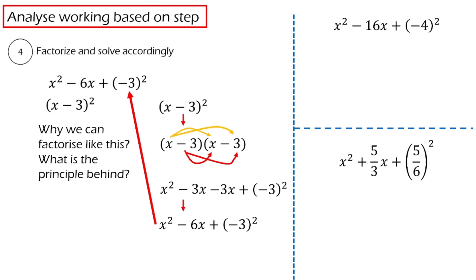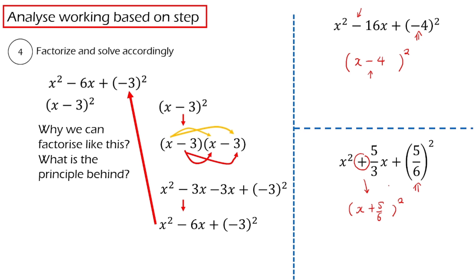I have created some examples to explain this. What we need to do is put a bracket, copy the first x, and copy the last term which is (negative 4) squared. To confirm whether the sign inside the bracket is negative or positive, look at the sign of B. If B is negative, the sign inside the bracket must be negative. For the next example, we write x and copy (5/6) squared. Since B here is positive, the sign inside the bracket will also be positive.